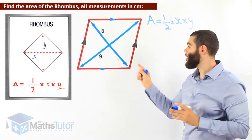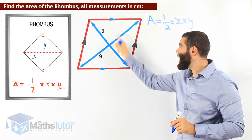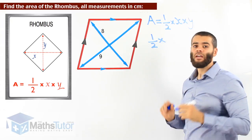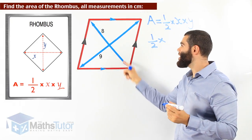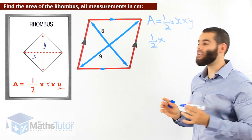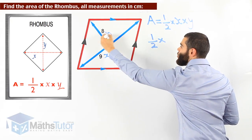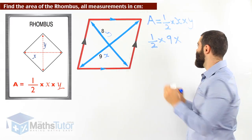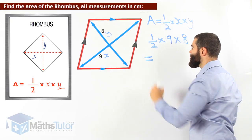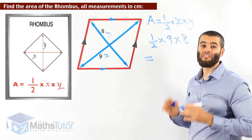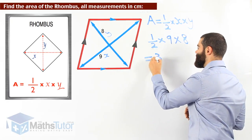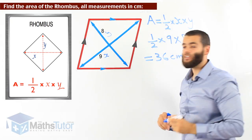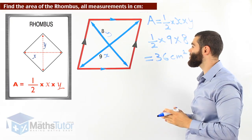Remember, x and y are not any of the sides of a rhombus, but in fact they are the diagonals. It doesn't matter which diagonal you call x and which you call y. We'll call the nine-centimetre diagonal x and the eight-centimetre diagonal y. Half times x times y — half times nine times eight. We know nine times eight is seventy-two, and half of that is thirty-six square centimetres. So the area of the rhombus is thirty-six square centimetres.